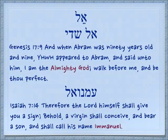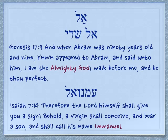The first of this group has the tsere, the two dots under the Aleph. It's pronounced El, and you are certainly familiar with this from several terms. The first term is El Shaddai. Genesis 17:1 — and when Abram was 90 years old and nine, Yehovah appeared to Abram and said unto him, 'I am the Almighty God. Walk before me and be thou perfect.' So El Shaddai here is translated as Almighty God.